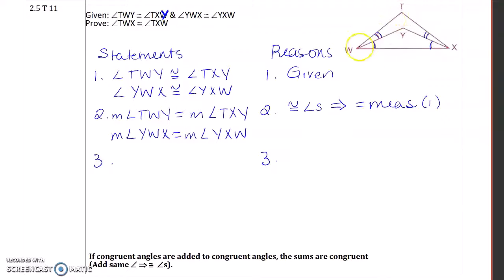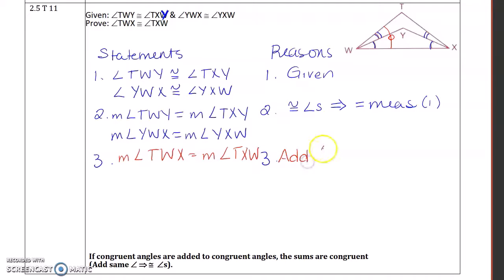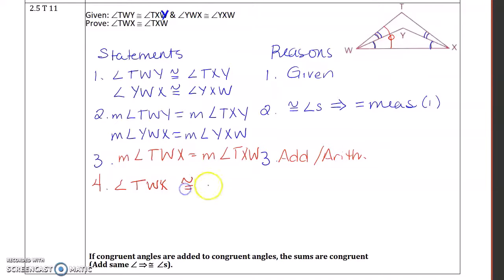Now if I combine angle TWY with angle YWX, I'm going to get the larger angle. So the measure of angle TWX is equal to the measure of angle TXW. Arithmetic — and then finally, if you have equal measure, then you have congruent angles.